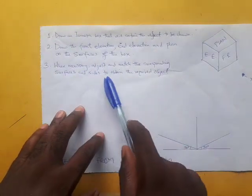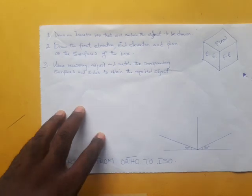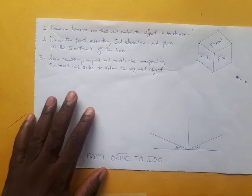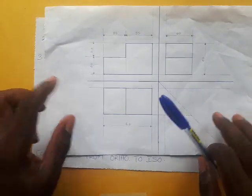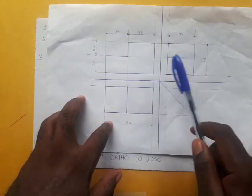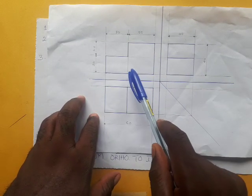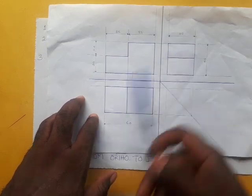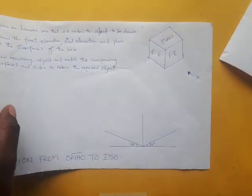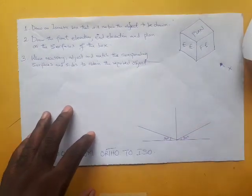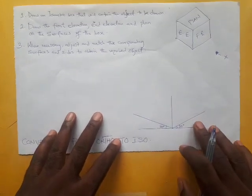It is very expedient that you do a rough sketch before you do the main drawing, because it will guide you and let you know if you're making mistakes or not. Finally, where necessary, adjust and match the corresponding surfaces and sides to obtain the required object. I'm going to be treating an example we've done before. I am going to use this box method to explain, because I find it very easy and simple to apply when it comes to questions that have to do with conversion from orthographic projection into isometric projection.